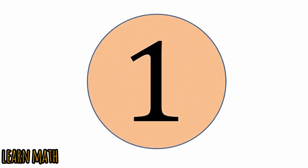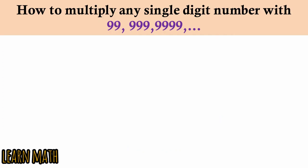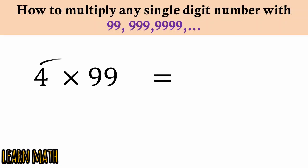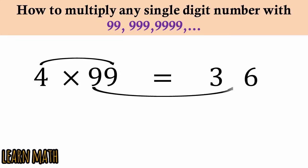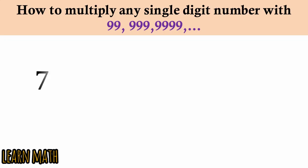The first trick is how to multiply any single digit number with 99, 999, etc. For example, 4 multiplied by 99: you will multiply 4 with 9 to get 36, and write this 9 here, so 396 is the answer.